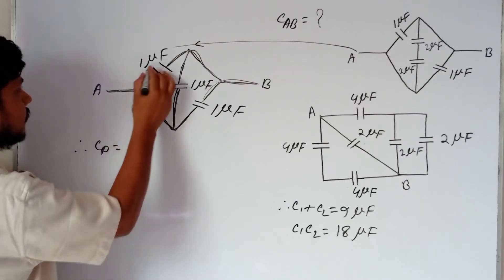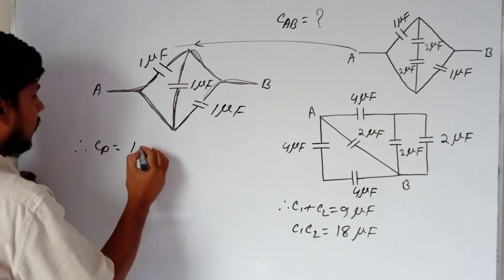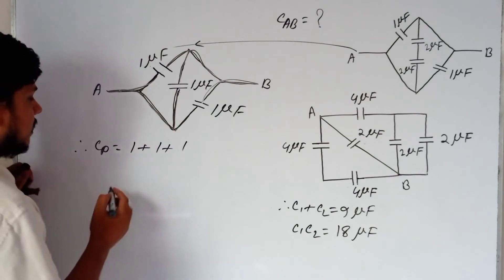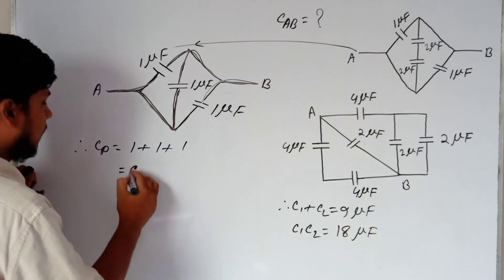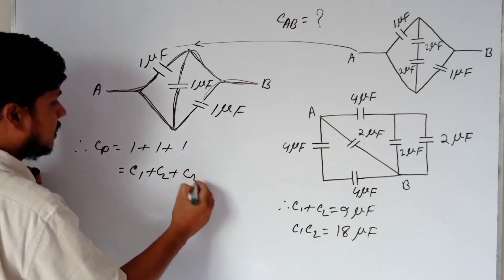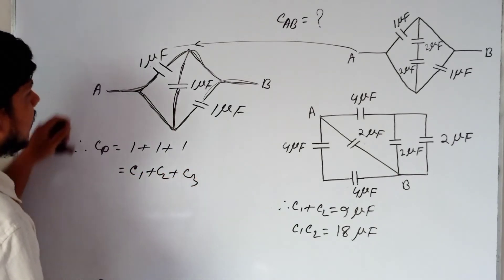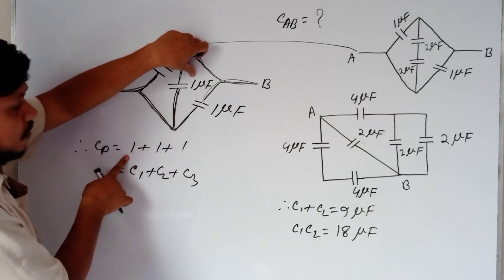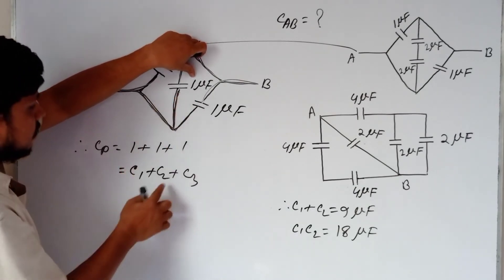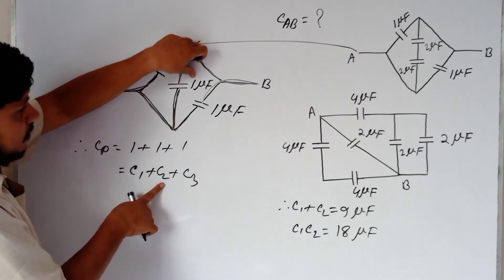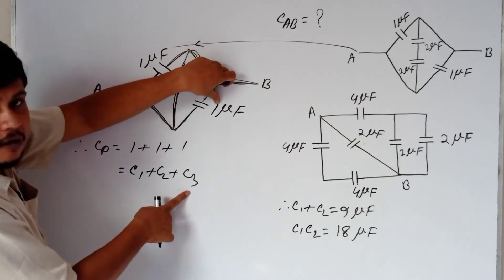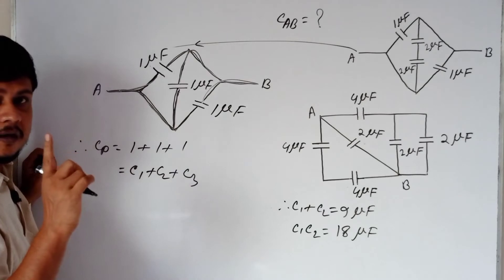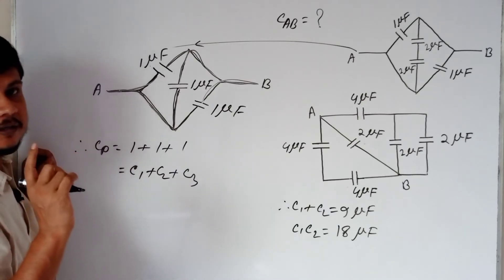Cp equals 1 plus 1 plus 1 because it is the same for C1 plus C2 plus C3 — adding the parallel capacitors together, the total is the sum of C1, C2, and C3.